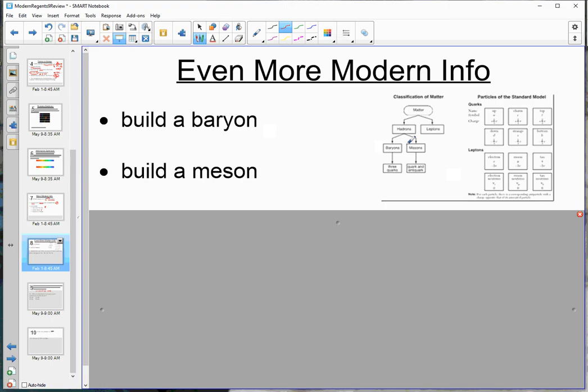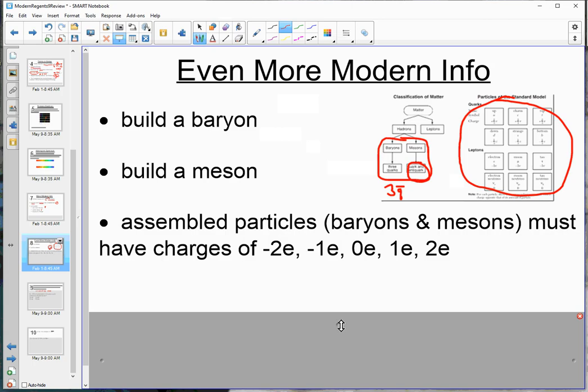You should also know how to build baryons and mesons, and that is clearly explained right here in the classification of matter table. If you're building a baryon, you're going to need three quarks or three anti-quarks. And when you're building a meson, you need one quark and one anti-quark for a grand total of two. So mesons are smaller than baryons, because the baryons have three quarks and the mesons only have two. And everything you need to build is right here in the particles of the standard model table. And the rule that you need to know for finishing building particles is when you assemble a particle, when you finish, it cannot have a fractional charge. Quarks can have a fractional charge, but when you put them together into particles, you have to finish with negative 2e, negative 1e, 0e, 1e, or 2e, where, of course, e is the elementary charge of 1.6 times 10 to the negative 19 coulombs.